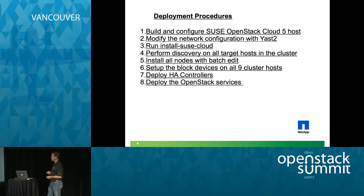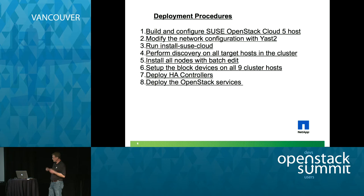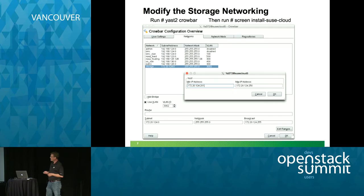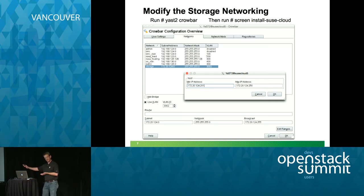In the actual deployment, you build and configure the SUSE OpenStack Cloud 5 host, modify the network — particularly for the storage network — run the SUSE install cloud, do discovery via Pixie boot, and install all the nodes with batch edit. Once nodes are up, you hook them up to the iSCSI block devices for STONITH fencing amongst your three hosts, then deploy HA controllers and OpenStack services. In my case, I pretty much went with the recommended SUSE networking scheme, with the exception of the storage network, which I had to modify in the YAST interface to get out to my actual storage network in the lab.